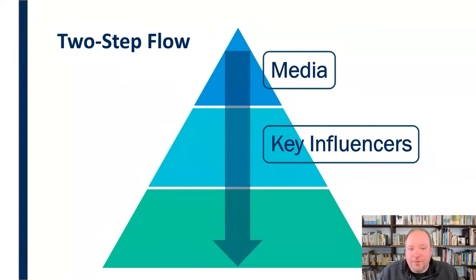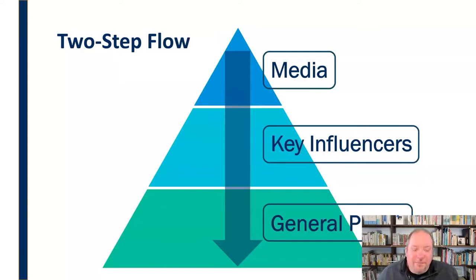Lazarsfeld and Katz said in this Two-Step Flow that the media has a message they want to convey. They might communicate and focus their efforts on what we would call key influencers, people who really can reach a lot of people. This term has taken on a whole new meaning now in the era of social media. Organizations are reaching out to these few people with massive followings. We don't need to reach every person, we need to reach these couple people, have them speak on our behalf, and that message will spread through them to the general public.